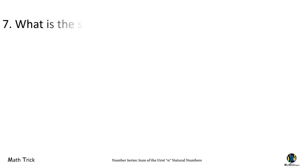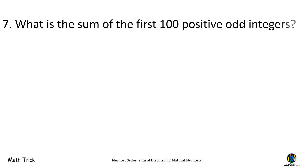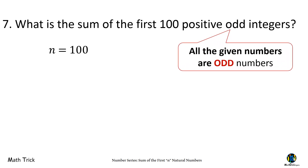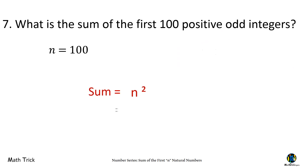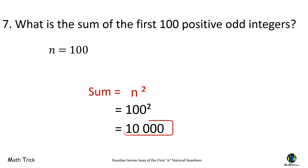What is the sum of the first 100 odd numbers? The number of terms is 100. Since all the given numbers are odd, we simply square N to find the sum. 100 squared is 10,000. The sum of the first 100 odd numbers is 10,000.